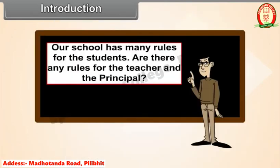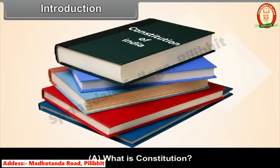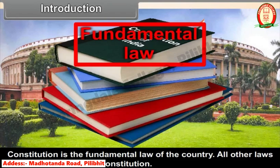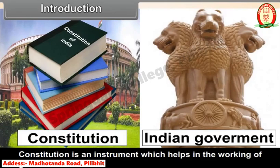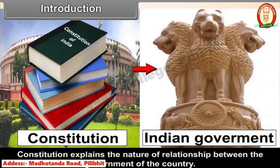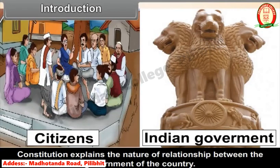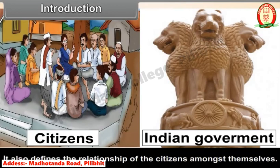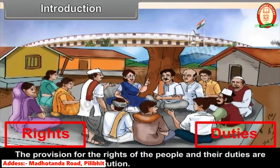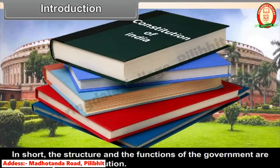Our school has many rules for students — but are there also rules for teachers and the principal? What is Constitution? Constitution is the fundamental law of the country; all other laws are subordinate to it. It is an instrument that helps in the working of government and a framework within which all organs of government work. It defines the relationship between citizens and the government, and among citizens themselves. The Constitution gives powers to the government and at the same time sets limitations on those powers. It includes provisions for the rights and duties of the people. In short, the structure and functions of the government are decided by the Constitution.